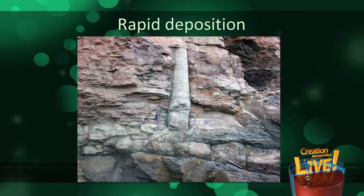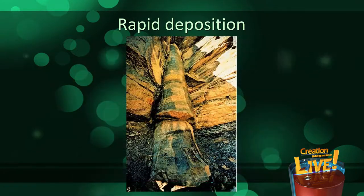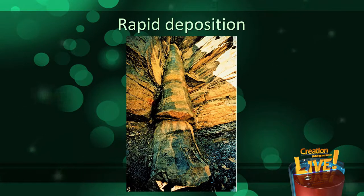Here's a fossilized tree-like plant extending through multiple layers of rock. Obviously the entire thing must have been buried rapidly — if it was buried over millions of years, the top of the tree would have rotted and wouldn't have been fossilized. Here's another picture of a fossilized tree extending through multiple layers of rock, with the base of the tree in a coal seam in Tennessee. This is evidence that the tree, the coal material, and the encasing sediment were all deposited before the tree rotted. If there was a global flood, this is exactly what we would expect to find.